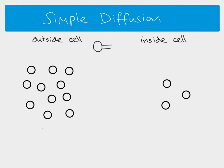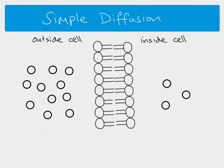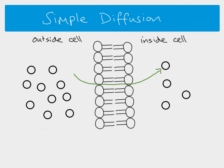In cells there's a cell surface membrane which separates the inside and outside environments. What you can see here is a phospholipid bilayer. Diffusion happens when particles are able to move through the phospholipid bilayer down the concentration gradient, but that can't always happen. For example, if you've got a molecule which is too big, bigger molecules cannot move into or out of the cell by simple diffusion.